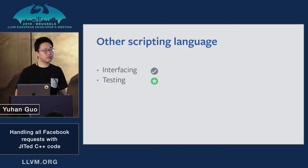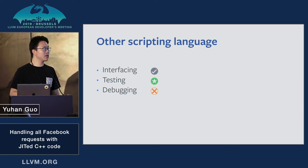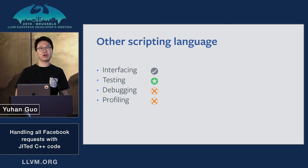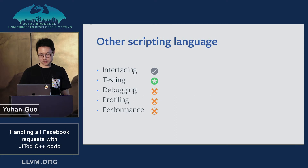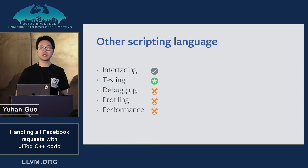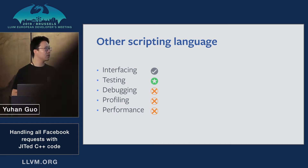Once the code is in production, we can have pretty good testing coverage, so that part is fine. What about debugging? That's not so great for a scripting language if you compare it to C++, especially since a lot of our tooling was built around C++. Profiling is also quite hard — you don't have the ability to dig into a problem to see which part runs slower and try to optimize it.